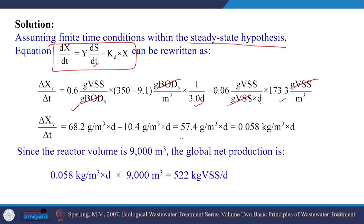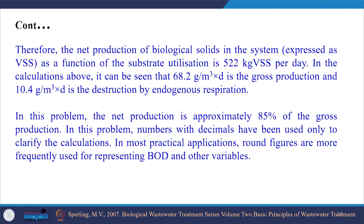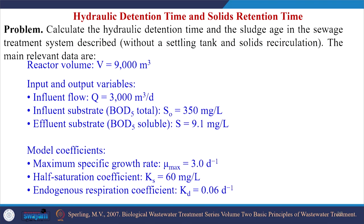Solving gives approximately 57.4 g/m³/day or 0.058 kg/m³/day net solid production. Multiplying by the reactor volume of 9000 m³, the overall net production is 522 kg VSS per day. The gross production was 68.2 g/m³ and the destruction due to endogenous respiration was 10.4 g/m³, so the net production is approximately 85 percent of the gross production.